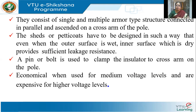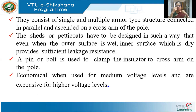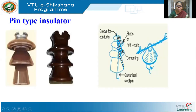The pin insulator consists of single or multiple armor-type structures connected in parallel, and they are mounted on a cross arm of the pole. Why are there petticoats? You can see that these have a bigger diameter, so if there is some water or something falling on it, it will taper off.